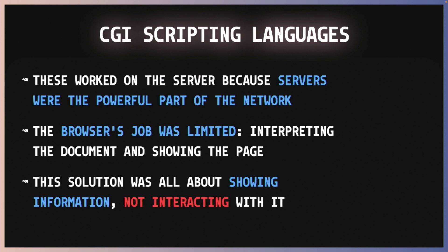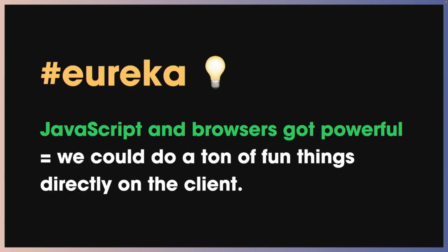The reason why all of these were working on the server is because back then, the server was the powerful part of the network. So basically, all the browser had to do was to interpret some information and show that — it was about showing information, not interacting with it a lot. And then JavaScript as a language evolved a lot, and browsers as a platform did as well. We could suddenly do a lot of fun things directly on the browser, and that was the rise of client-side rendering and SPAs, as we know them.